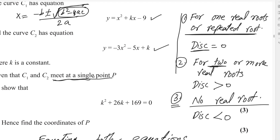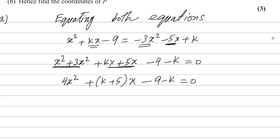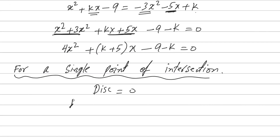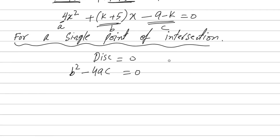Here we have a single point of intersection, meaning there will be one real root and one value of x. So we use the fact that for a single point of intersection, discriminant equals 0, meaning b squared minus 4ac equals 0. In our quadratic, b is k plus 5, a is 4, and c is minus 9 minus k. So we write: (k plus 5) squared minus 4 times 4 times (minus 9 minus k) equals 0.